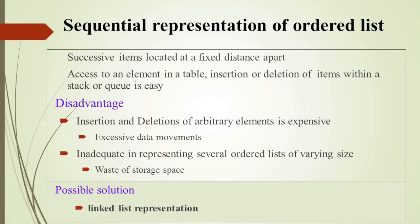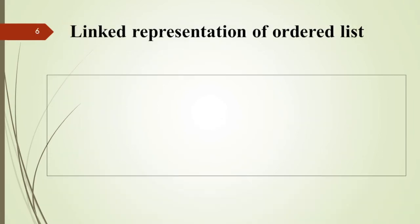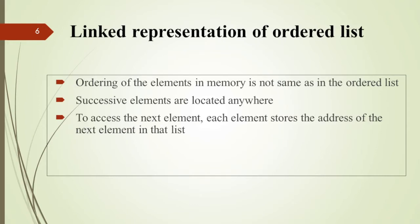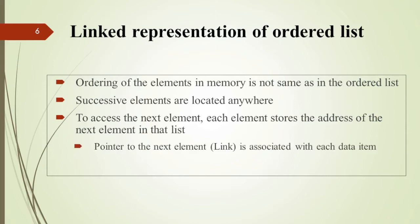Due to these two disadvantages of sequential representation, we need to go for another form of representation, which is linked list representation. In a linked list, the ordering of elements in memory is not the same as in the ordered list. For example, the first element may be at the 10th position, the second element at the 7th position, and the third element elsewhere — successive elements can be located anywhere. Each element stores the address of the next element, which is called a link or pointer to the next element.